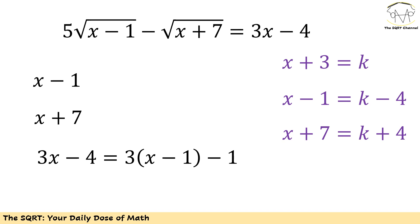I'm going to start by changing 3x minus 4 to something based on x minus 1. It's easy to see that I can rewrite 3x minus 4 as 3 times (x minus 1) minus 1. Now I only have x minus 1 and x plus 7. Between these two I'm going to use x plus 3 as a new variable k, so that x minus 1 becomes k minus 4 and x plus 7 becomes k plus 4.